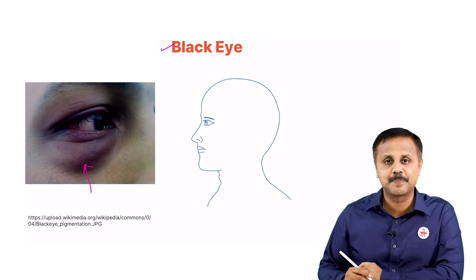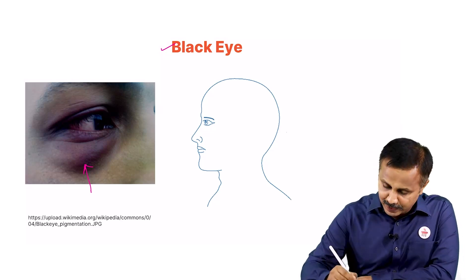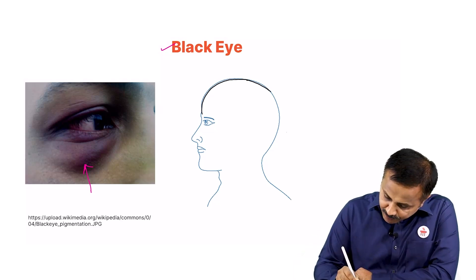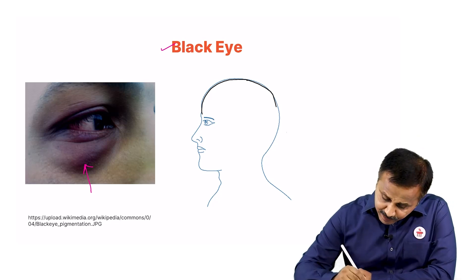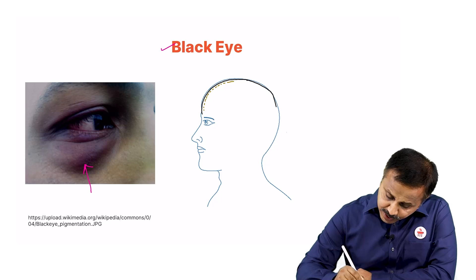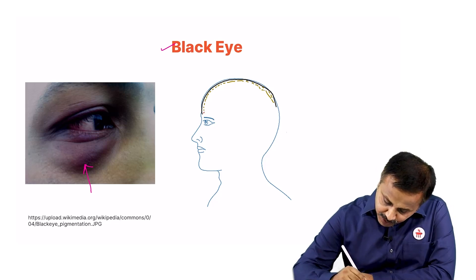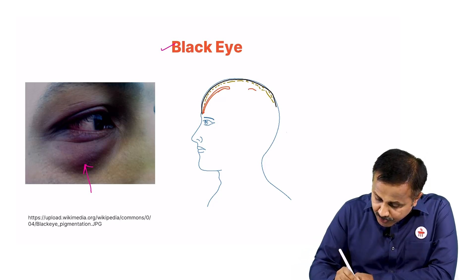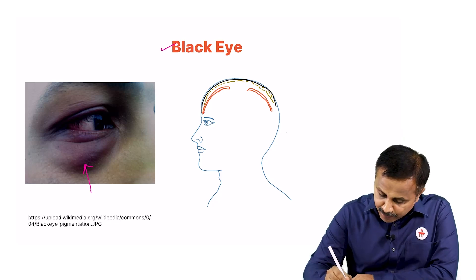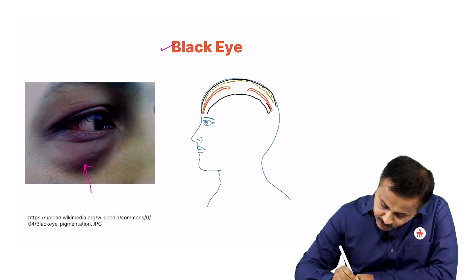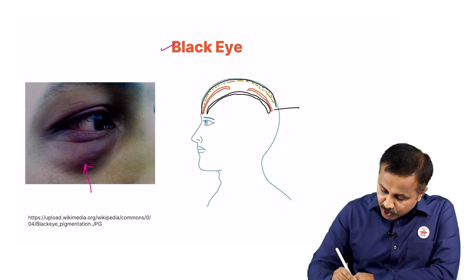Now let's try to understand what exactly causes black eye. We have the first layer of scalp formed by the skin, then the layer of connective tissue, and the third layer is the layer of muscle. Here we have the frontal belly and the occipital belly. The peculiarity of these two bellies — if we imagine the cranial vault — the occipital belly is firmly attached to the cranial vault because it arises from the superior nuchal lines.